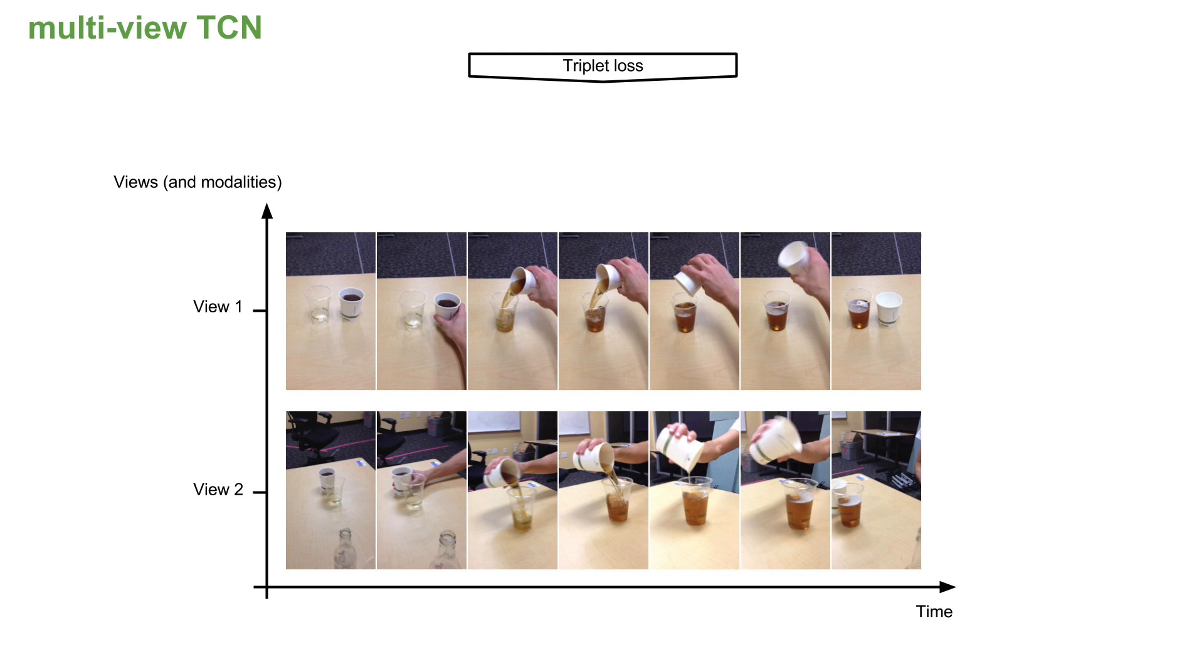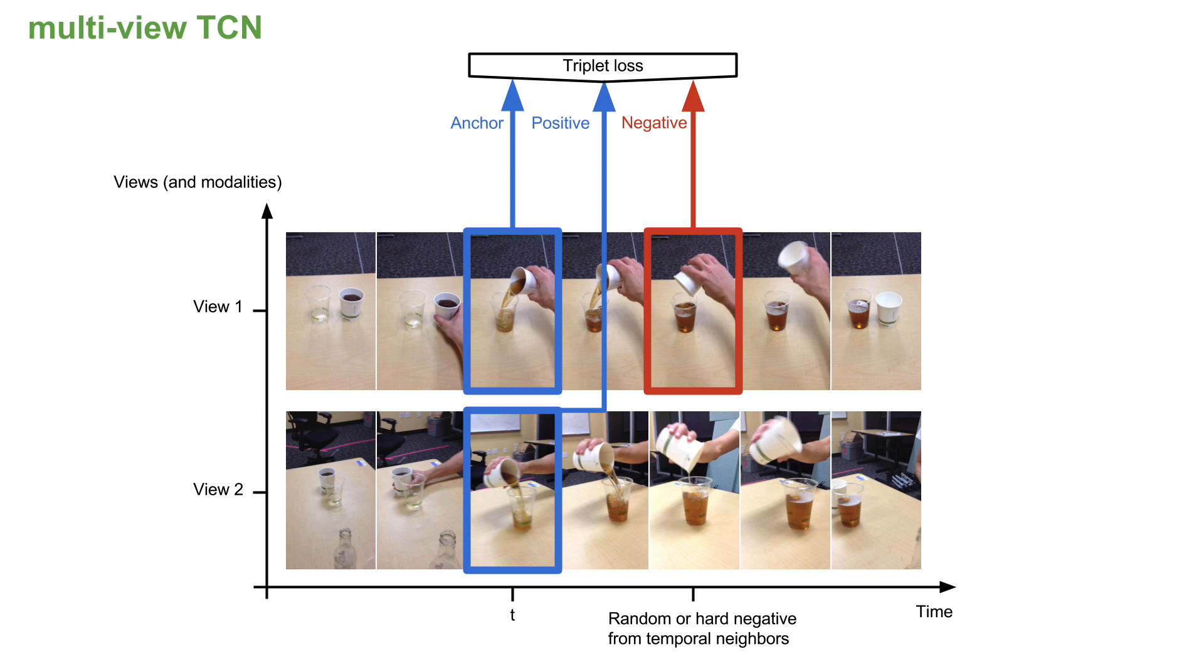Our model uses a triplet loss trained on multi-viewpoint observation. Co-occurring frames from multiple viewpoints are attracted to each other in the embedding space, while visually similar frames from nearby time steps in the same video are pulled apart. This encourages the embedding to be invariant to viewpoint, but sensitive to semantic cues that are indicative of time, such as whether liquid is pouring into a cup.